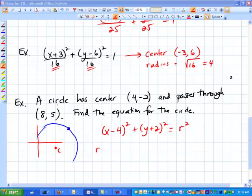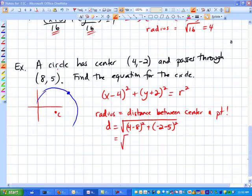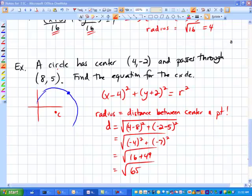But I'm going to find out because I know that the radius is just the distance between the center and the point that's on the circle. So I'm going to find that distance, which is 4 minus 8 quantity squared plus negative 2 minus 5 quantity squared. So I get the square root of negative 4 squared plus negative 7 squared equals 16 plus 49. And I came up with these numbers, 65, square root of 65.